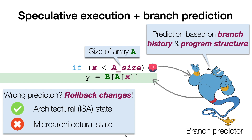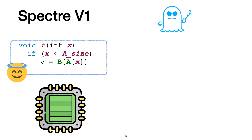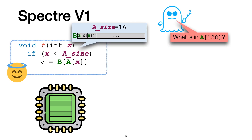Now we have everything we need to understand speculative execution attacks. Here we focus on Spectre variant 1. We have an honest process and the Spectre attacker. The attacker can trick the honest process into executing the snippet from before, encapsulated into function f with attacker-provided values. Observe also that the honest process and the attacker share the same cache. The goal of the Spectre attacker is learning the value of an arbitrary memory location in the honest process memory. Let's say we want to learn the value of location a of 128. Observe that a of 128 is not part of a, as both sizes are 16.